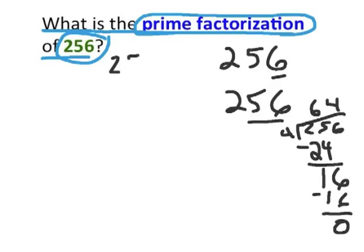So we're going to write 256 up here and create our factor tree. Two factors that we would write that gives us 256 are 4 times 64. Now I want us to think, are the numbers 4 and 64 prime numbers or composite numbers?